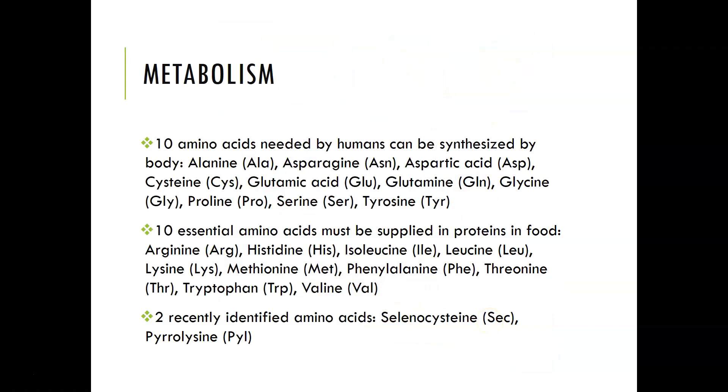There are 10 amino acids that are needed by humans that can be synthesized by the body, usually by the liver. The ones that we can make are alanine, asparagine, aspartic acid, cysteine, glutamic acid, glutamine, glycine, proline, serine, and tyrosine.